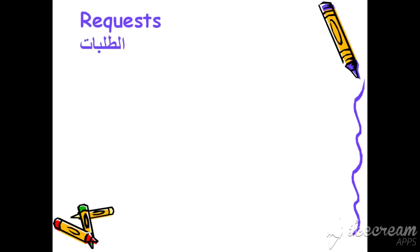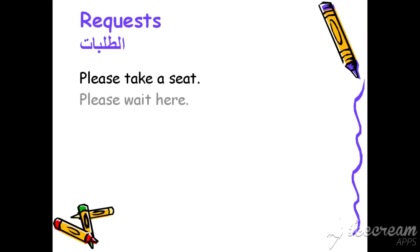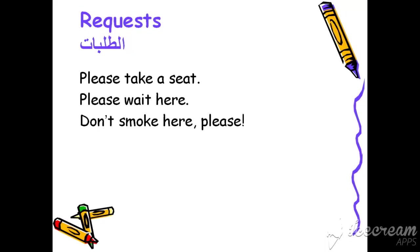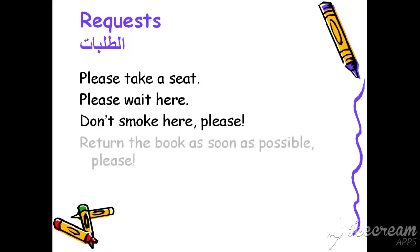Requests — اللي هي الطلبات. With requests we use the word 'please'. For example: 'Please take a seat', 'Please wait here', 'Don't smoke here, please'. ممكن تيجي كلمة please at the beginning of the sentence or at the end. 'Return the book as soon as possible, please'.